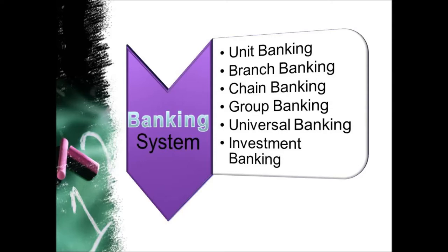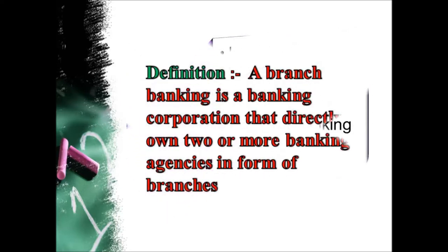Every country has its own banking system. Banking systems are broadly classified on various grounds like volume of operations, business pattern, and area of activity. There are different types of banking systems: unit banking, branch banking, chain banking, group banking, universal banking, and investment banking. In the previous topic we discussed unit banking, and now we are supposed to discuss branch banking system in detail.